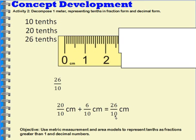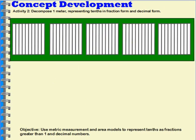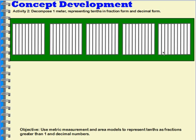Now let's take a look at how this would look in decimal form. Here I have some area models. Each area model has been separated into 10 parts: 1, 2, 3, 4, 5, 6, 7, 8, 9, 10. So in this one I have 10. I have a total of 5 area models, so how many tenths do I have? I have 50 tenths: 10, 20, 30, 40, 50. Now I'm going to shade some in.